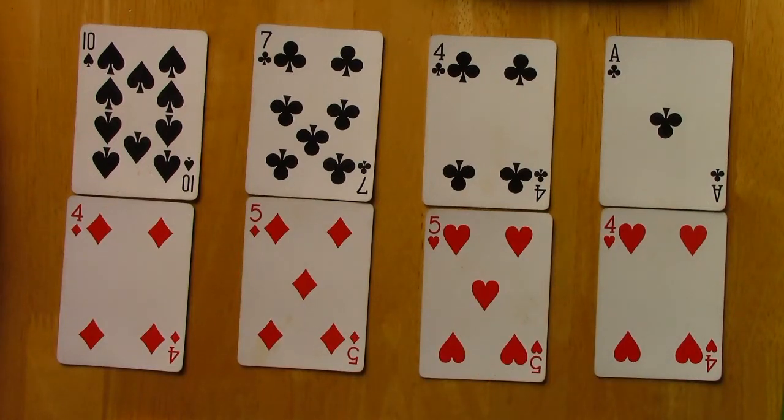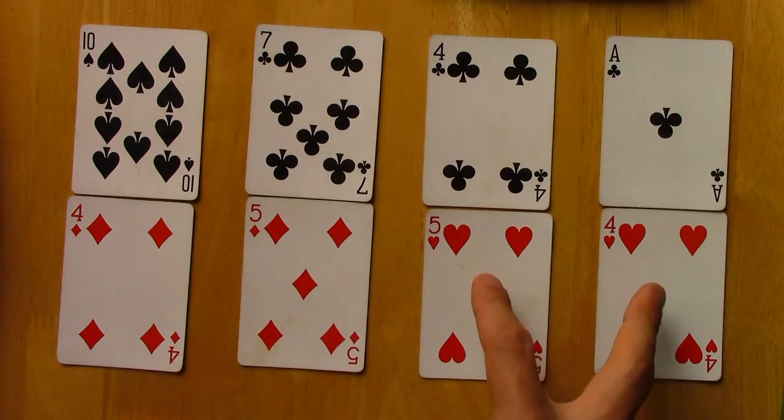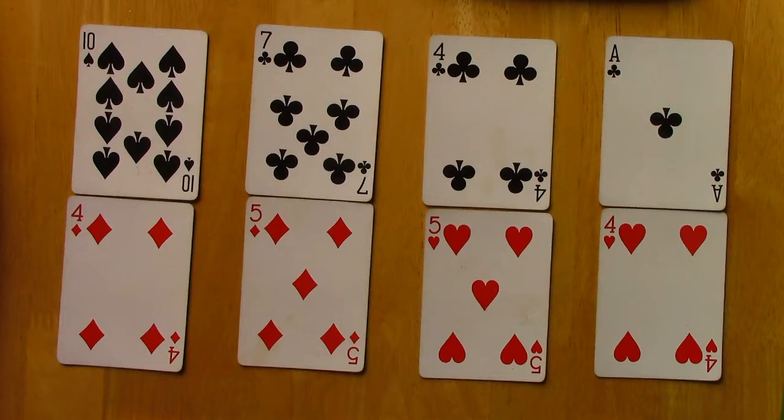I should note we also observe the treatment status for each individual, so we know that these two individuals are treated in our universe, and we observe that these two are untreated in our universe.